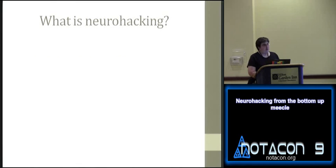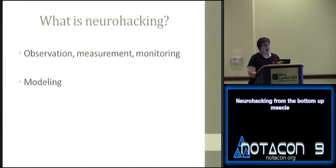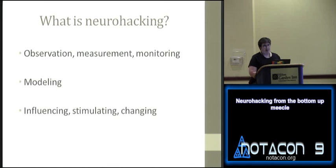What is neurohacking? To me there are three main areas. The first is observation without changing — trying to see how nerves work in their natural state. Once you know how they work, building models is a good way of finding out if you really understand what's going on. The third is changing how the neurons work, either by disruption or extra stimulation, seeing if you can predict or record what those changes do.